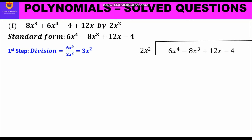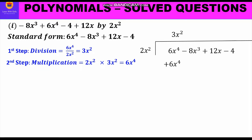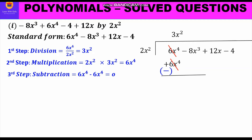We write 3x² in the quotient. Now the second step is multiplication: 2x² multiplied by 3x² gives 6x⁴, which we write below 6x⁴ in the dividend. Next is the third step, subtraction. We put a minus sign and subtract — since one is plus and one is minus, both cancel out and we get 0.